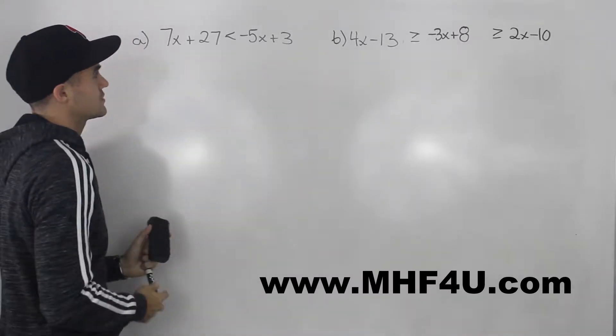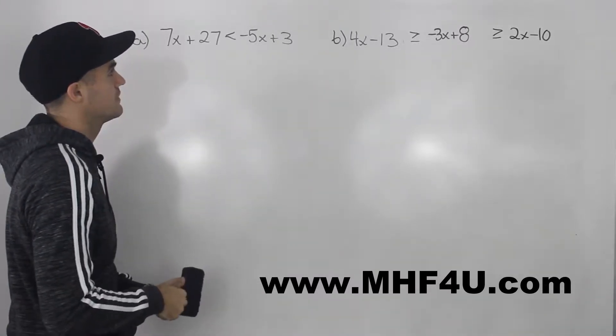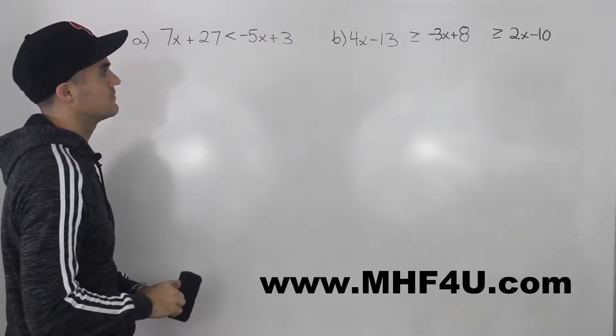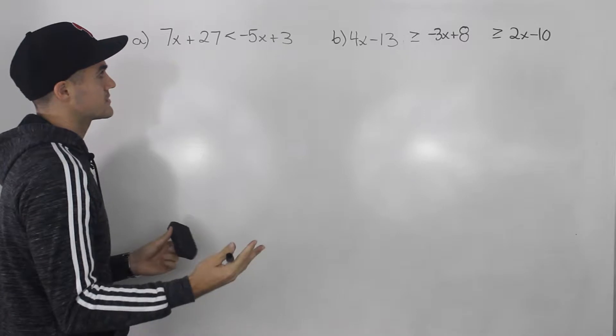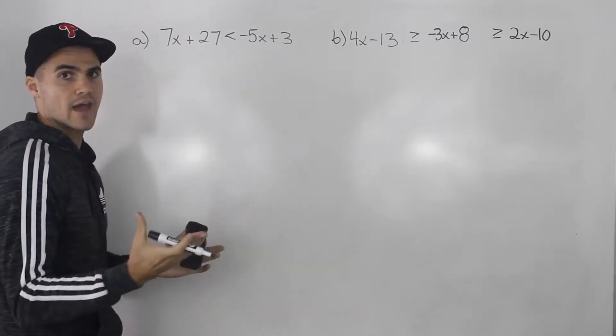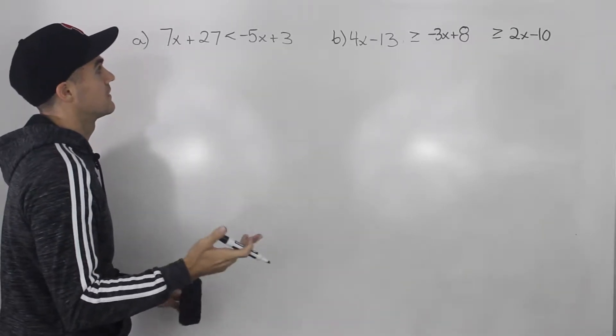So let's start with this one here. So we got 7x plus 27 is less than negative 5x plus 3. So what you want to do with inequalities, like I've discussed before, is you want to just isolate for the x like you would with an equation.